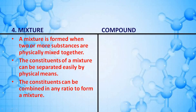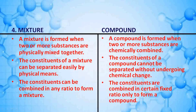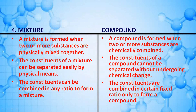Distinguish between mixture and compound. A mixture is formed when two or more substances are physically mixed together; the constituents of a mixture can be separated easily by physical means and can be combined in any ratio. A compound is formed when two or more substances are chemically combined; its constituents cannot be separated without undergoing chemical change and are combined in a fixed ratio only.